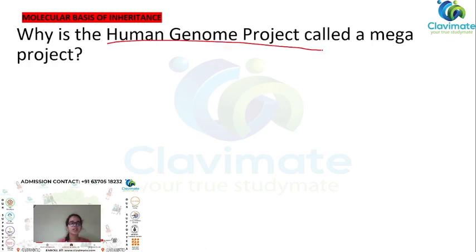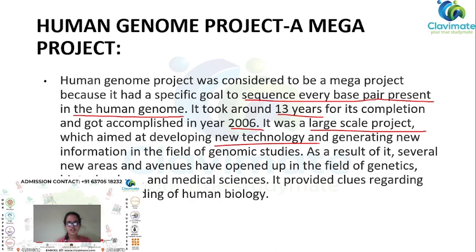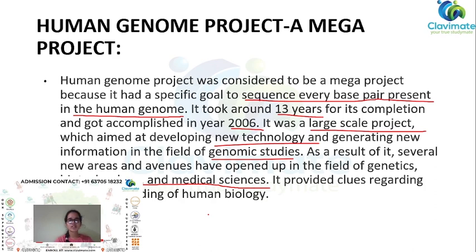Why is the human genome project called a mega project? The human genome project was considered a mega project because it had a specific goal to sequence every base pair present in the human genome. It took around 13 years for its completion and was accomplished in the year 2006. It was a large-scale process which aimed at developing new technology and generating new information in the field of genetics, opening several new areas in genetics, biotechnology, and medical sciences, and providing clues regarding the understanding of human biology.